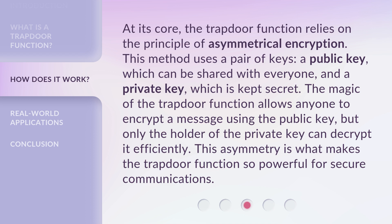The private key is kept secret. The magic of the trapdoor function allows anyone to encrypt a message using the public key, but only the holder of the private key can decrypt it efficiently. This asymmetry is what makes the trapdoor function so powerful for secure communications.